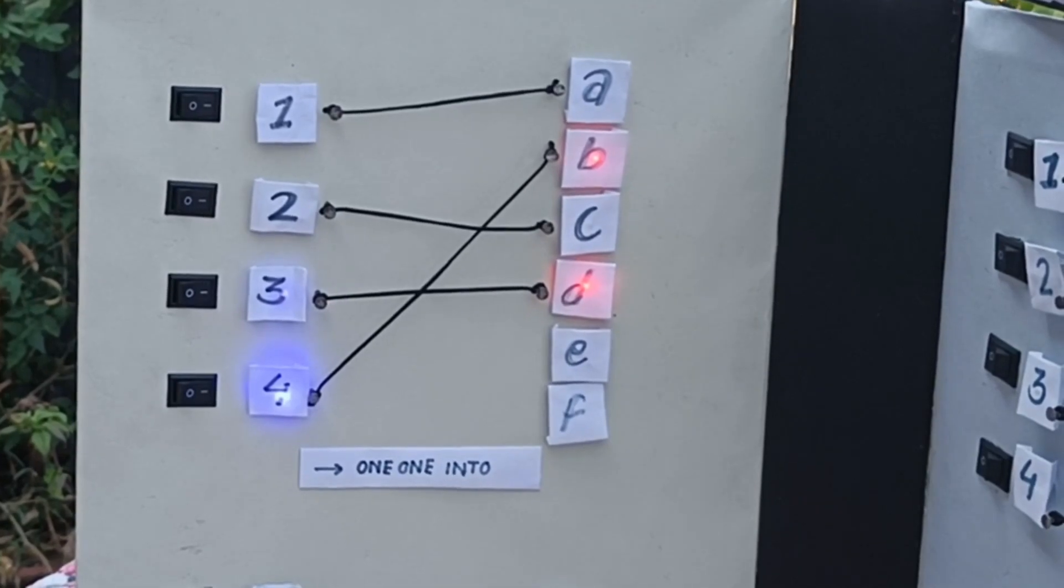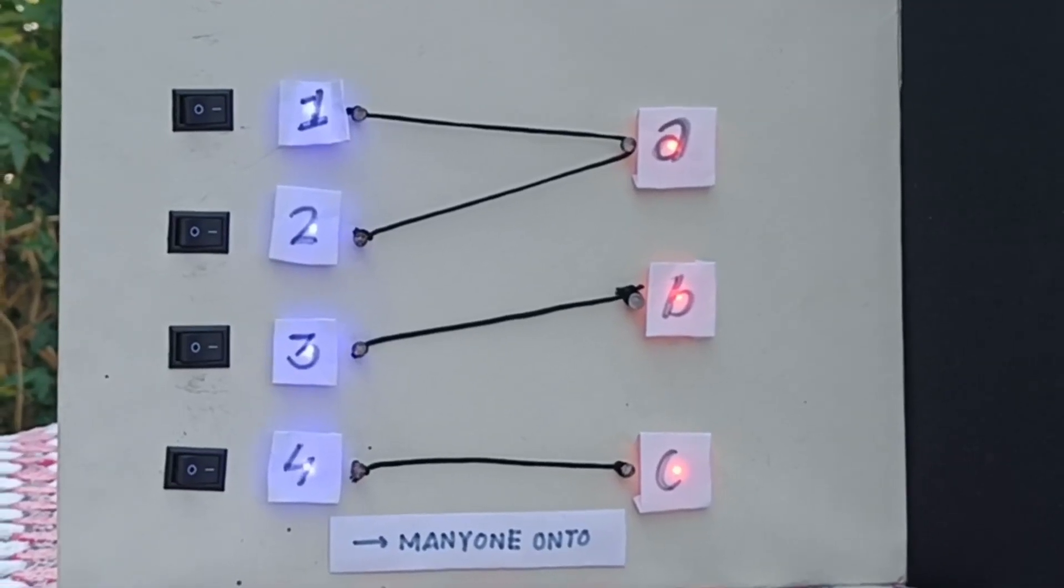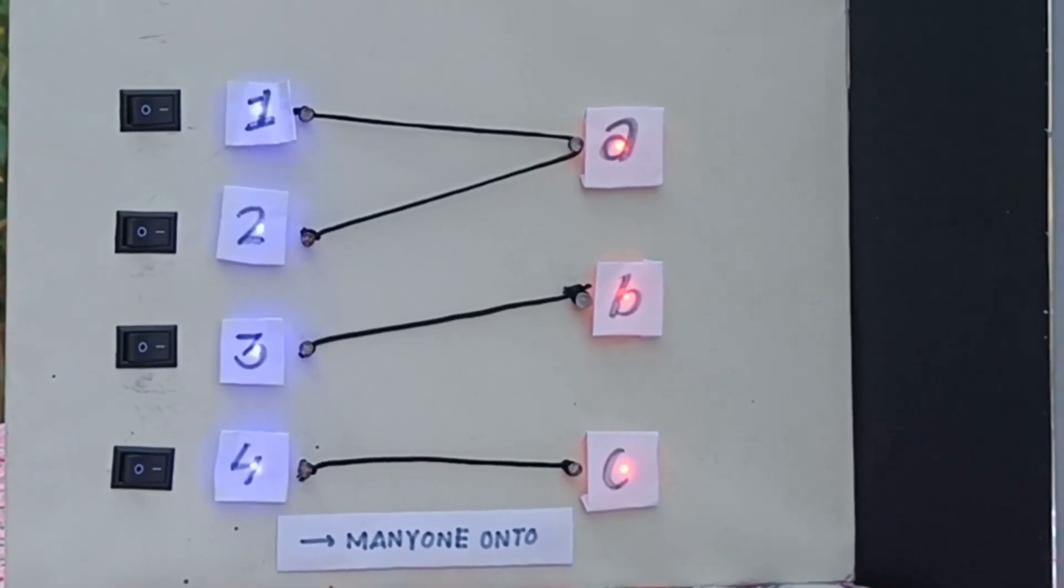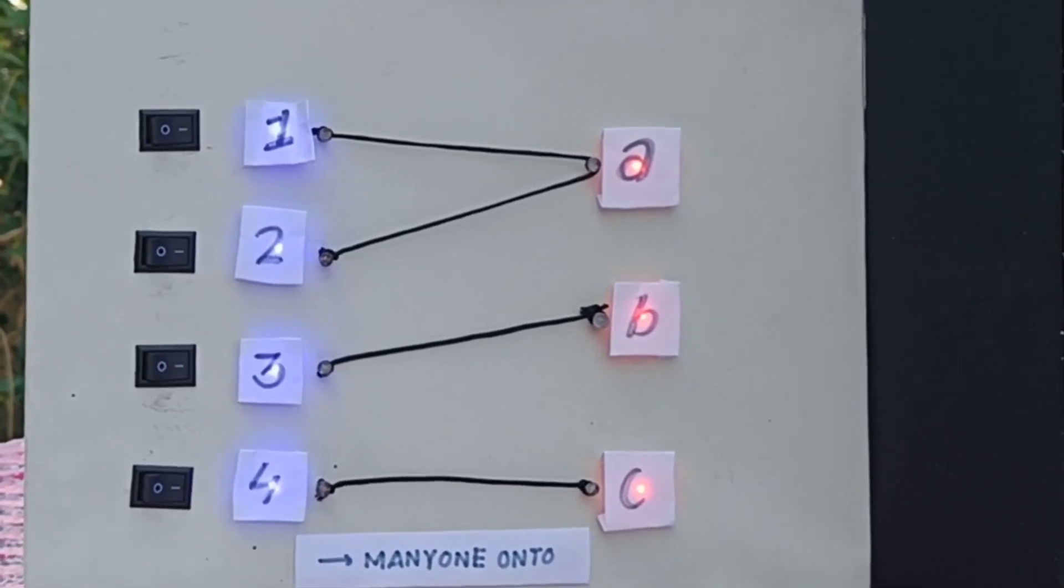Our next type is many-one onto. This is many-one because elements 1 and 2 in set A have connected to single element of set B, and onto because all elements in set B have its pre-image in set A.